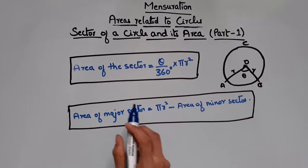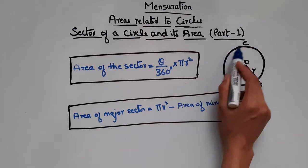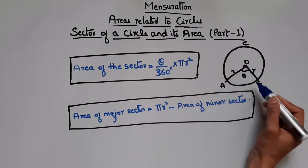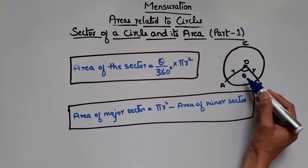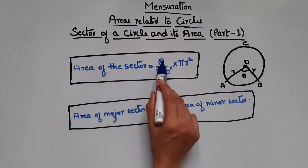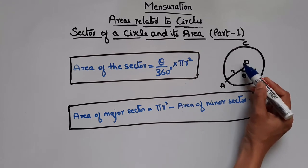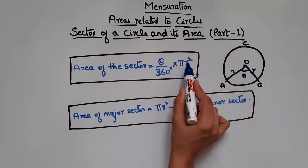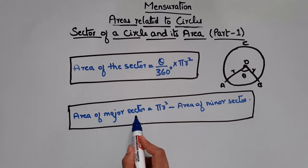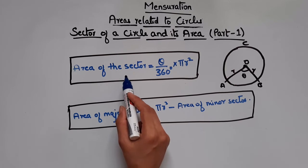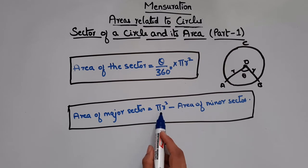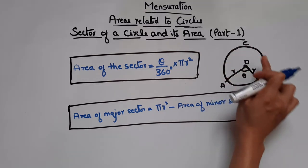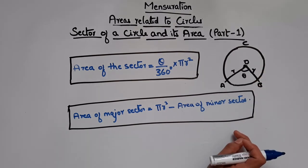Now let's see how to find the area of the sector. The area of a circle is πr². The area of sector AOB is given by: (theta / 360°) × πr², where theta is the angle subtended at the center. The total angle is 360 degrees, and we use only the angle theta of our sector. Theta is in degrees here. If asked for area of major sector, it is given by πr² minus area of the minor sector.